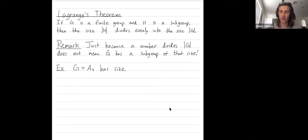In particular, I want to explain why the converse to Lagrange's theorem is not true. Lagrange's theorem says that if I give you a finite group and then I give you a subgroup H, then the size of that subgroup divides evenly into the size of the group.